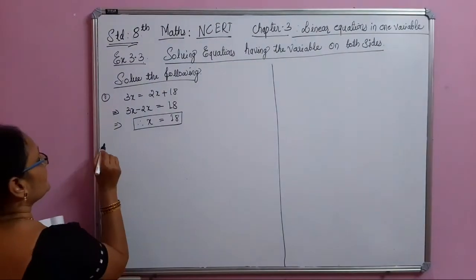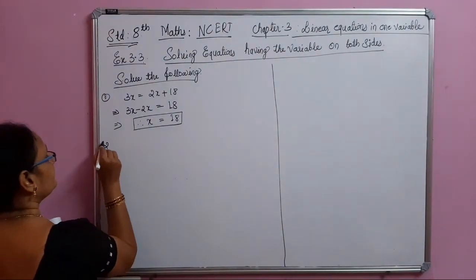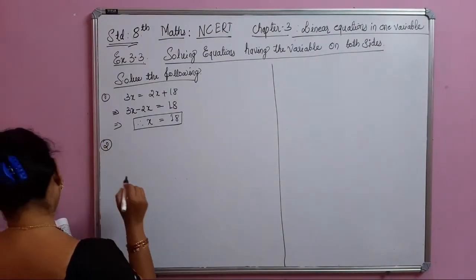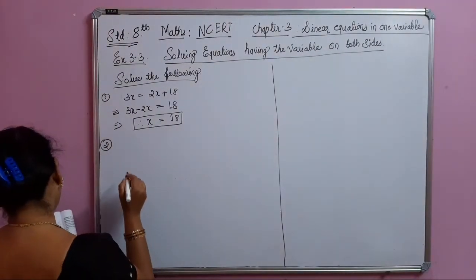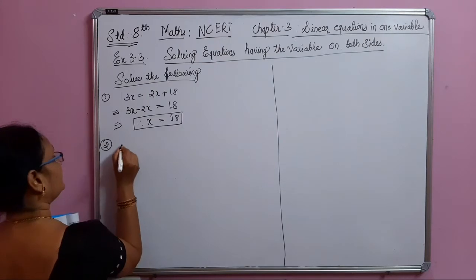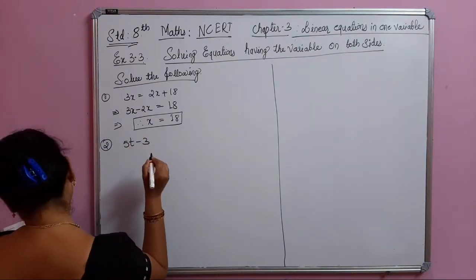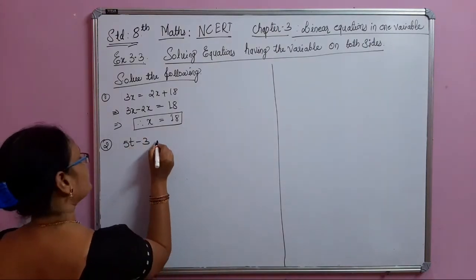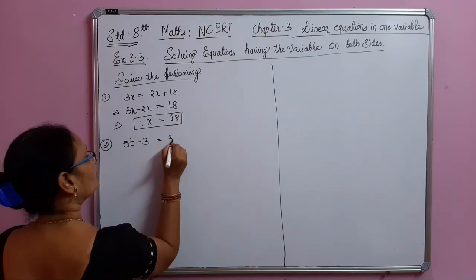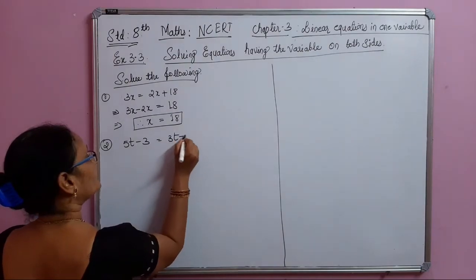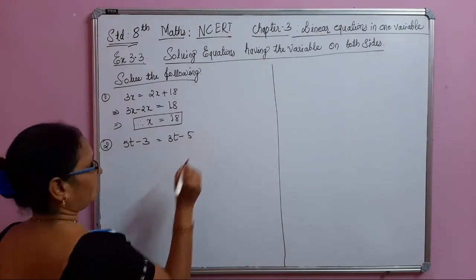The second problem is 5t minus 3 is equal to 3t minus 5.